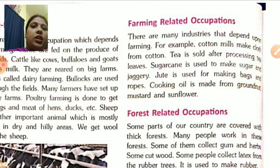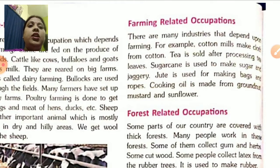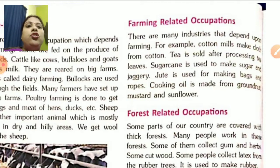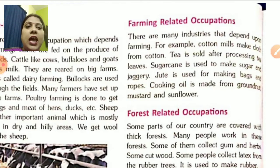Tea is sold after processing tea leaves. In our country, tea is sold after processing tea leaves. Sugar cane is used to make sugar and jaggery. With the help of sugar cane, sugar and jaggery are prepared.